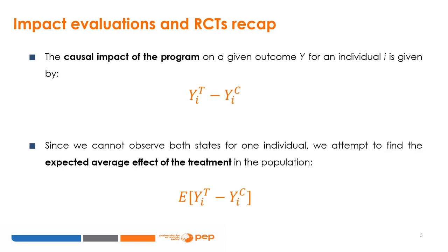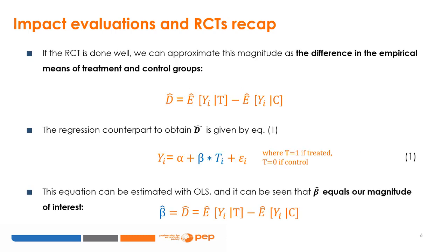It is useful to first present our notation. The causal impact of the programme on a given outcome Y for an individual i is given by the difference between the outcome for this individual under treatment, denoted by Y sub i T, and the outcome under the control group, denoted by Y sub i C. Since we cannot observe both states for one individual, we attempt to find the expected average effect of the treatment in the population — that is, the expected value of this difference across all individuals. If the RCT is done well, we can approximate this magnitude as the difference in the empirical means of the treatment and control groups in our experimental sample.